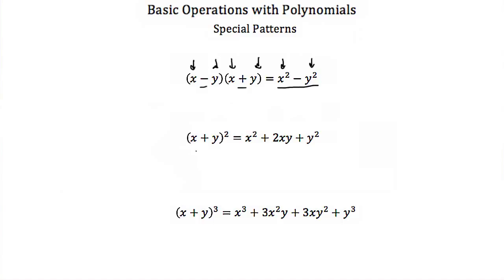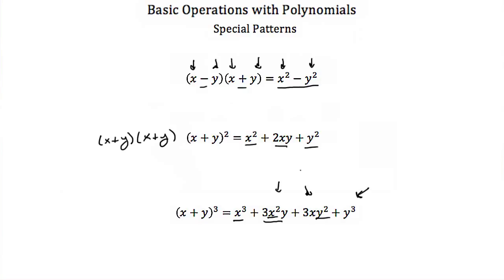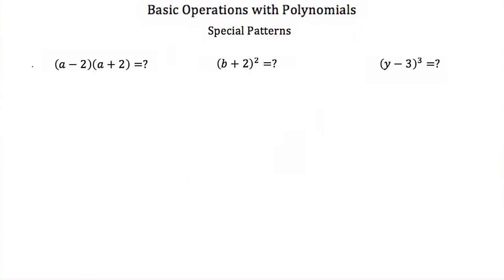If we have x plus y squared, that's the same as x plus y times x plus y, and it always breaks down into x squared plus 2 times both numbers plus y squared. If we have x plus y cubed, it's always the first term cubed, plus 3 times the first number squared times the second, plus 3 times the first number times the second number squared, and then the second number cubed.